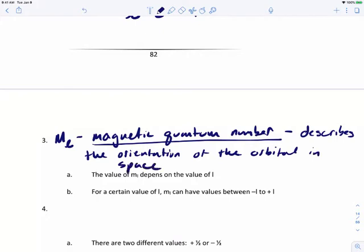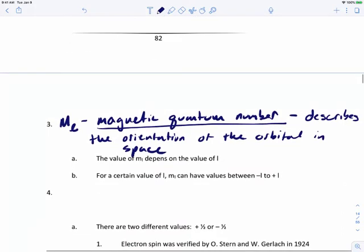So the value of M sub L depends on the value of L. Let's say the value of L is one, so that's describing a P orbital. That means the value of M sub L can be from minus L to a positive L. So if we're saying that L is one, so that's describing the P orbital...